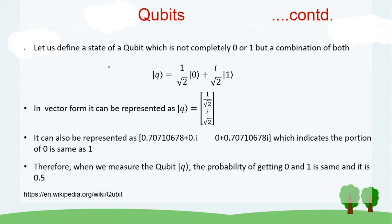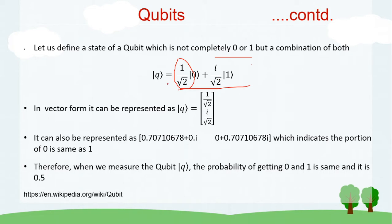Let's define a qubit state that is not completely zero or one. You will often see the factor 1/√2 when working with qubit states. This is mainly because the absolute magnitude squared of the zero-state coefficient plus the absolute magnitude squared of the one-state coefficient must sum to one. Since (1/√2)² = 1/2, and 1/2 + 1/2 = 1, that is why 1/√2 appears so frequently.